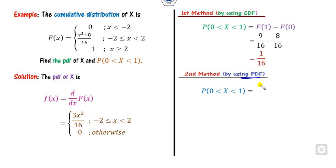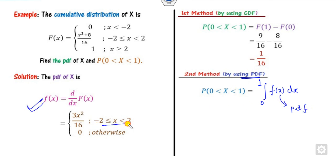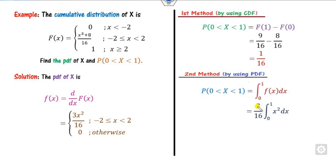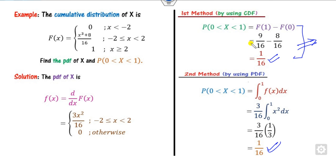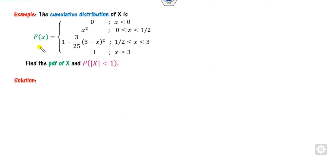Using the PDF method, you integrate from 0 to 1: ∫f(x)dx. The small f is always the PDF. Since 0 to 1 lies in the middle interval, the function is 3x²/16. Integrating gives the same answer, 1/16. Always remember: using the CDF gives the answer in just two lines.